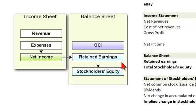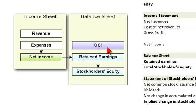Now here's the key. Retained earnings is not the only component in stockholders' equity. Recall that total assets minus total liabilities equals stockholders' or shareholders' equity, and other comprehensive income is changes to that stockholders' equity that is not recognized on the face of the income statement.